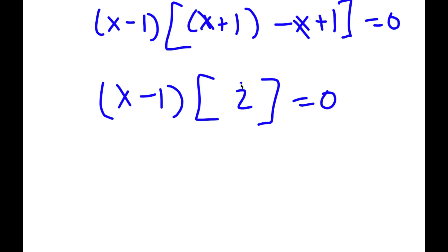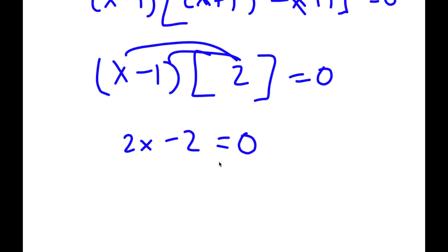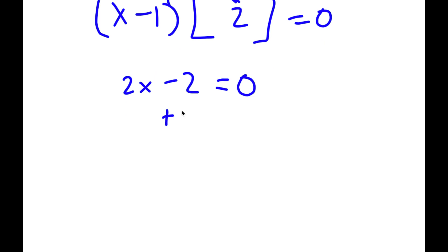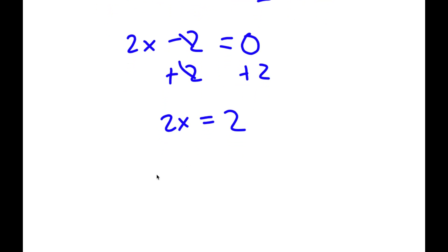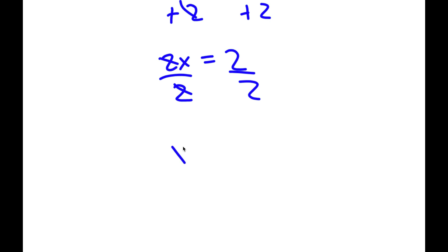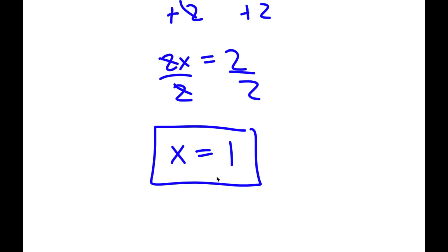So I have x minus 1 times 2 is equal to 0. To solve this, I'm going to distribute the 2. So 2 times x is 2x and 2 times negative 1 is negative 2, so I have 2x minus 2 is equal to 0. I add 2 on both sides — these cancel — and I have 2x is equal to 2. Dividing both sides by 2, I'm left with x is equal to 2 divided by 2, which is 1. So this is my answer.